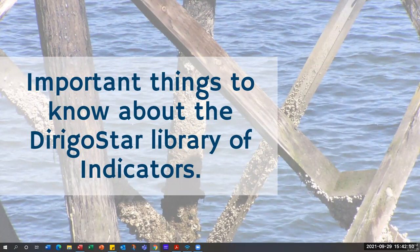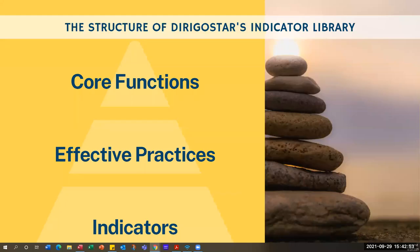Now I'm going to talk about the indicators. I want to talk about the structure of the indicators and how they're written. The indicators in Derago Star's library have core functions — the main topic areas — then effective practices, which are what schools often use to say here are the practices we're going to change. But we found a lot of times that schools maybe broke things down a little, but not far enough. So we've taken it one step further and broken those indicators down even more granularly.